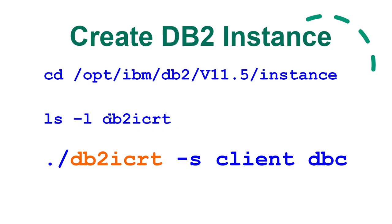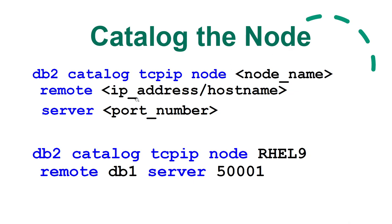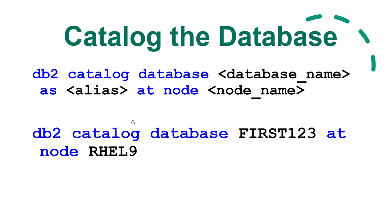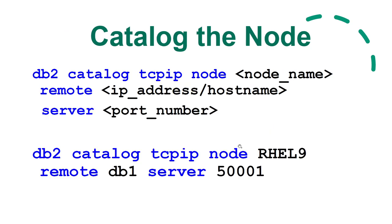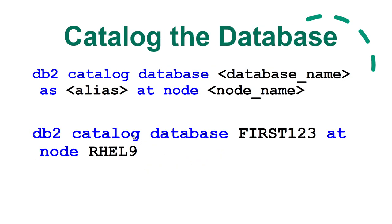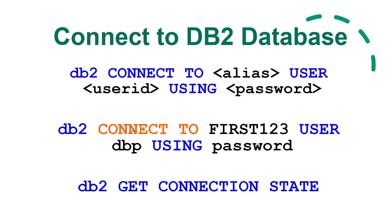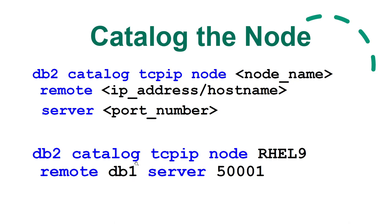Run the command 'db2icrt -s client dbc' where 'dbc' is the instance owner user ID created at the client level. Once done, your client instance is created. Now run the catalog node command — as many times as you have instances. The catalog database command runs per database: one instance with two databases means catalog node runs once and catalog database runs twice.